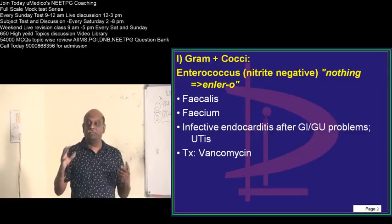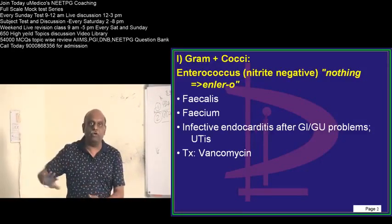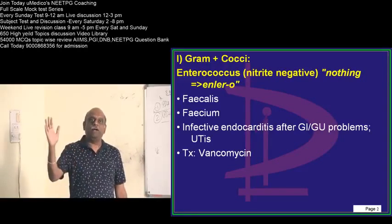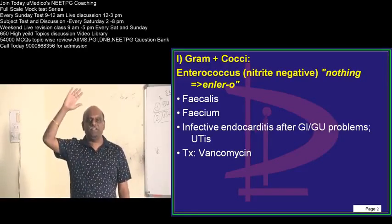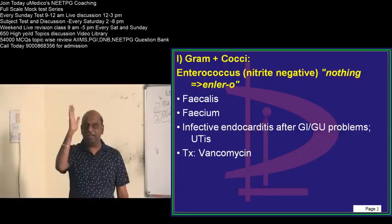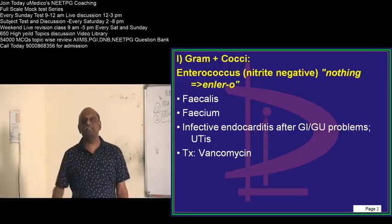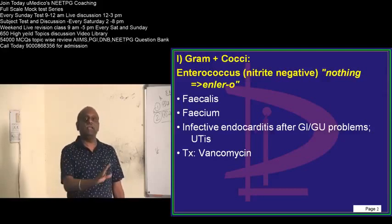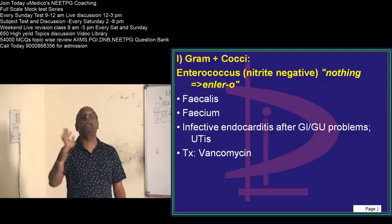But, even without the table before you, you should close the eyes and remember. I am telling you, alpha hemolytic, optochin sensitivity differentiator. Beta hemolytic, bacitracin sensitivity. Gamma hemolytic, NaCl, 6% NaCl, whether it can grow or not.